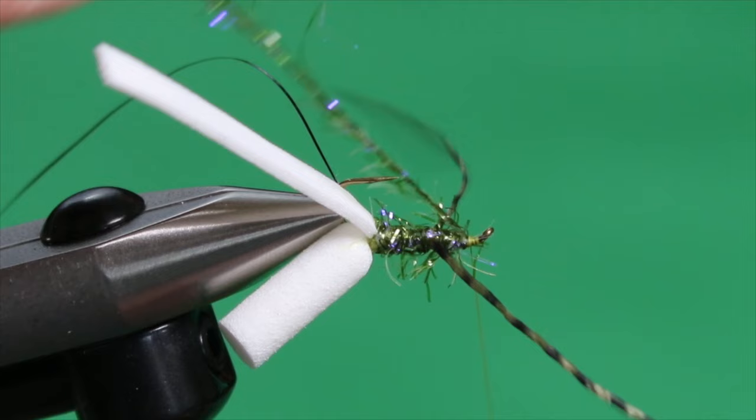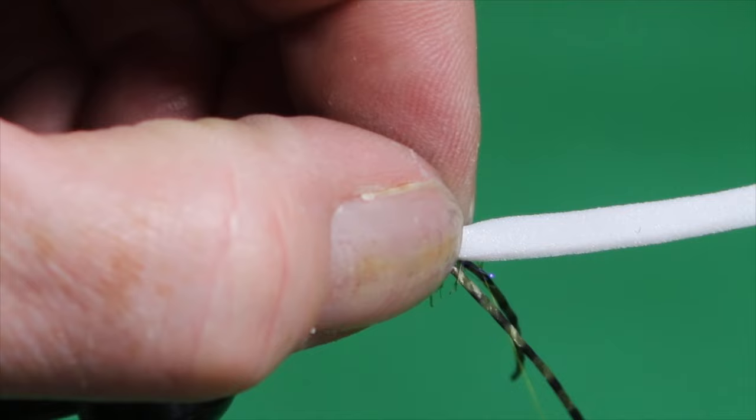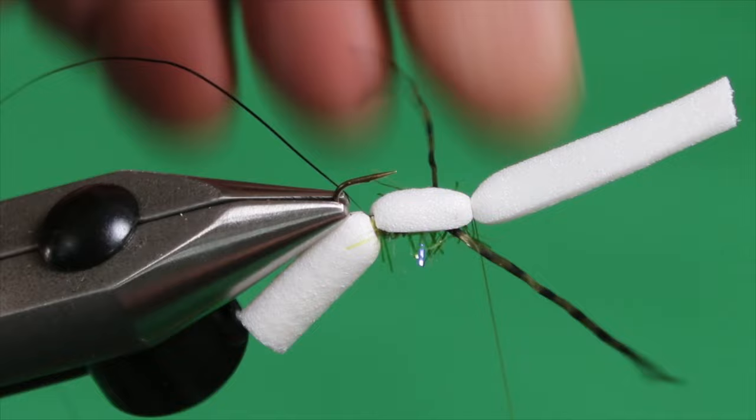And carefully trim. And now we're going to pull over our foam. And come straight across if we can. Cinch it down with a couple of wraps. But do not trim off that excess. I'm going to fold that back over to form a little head.